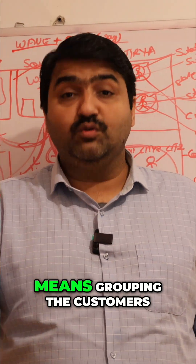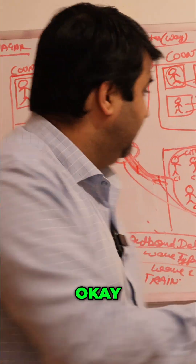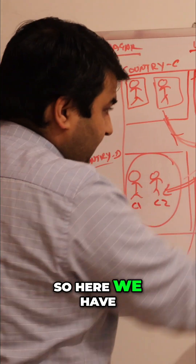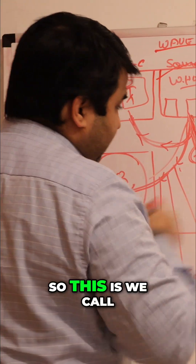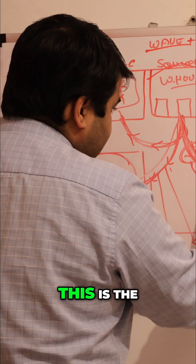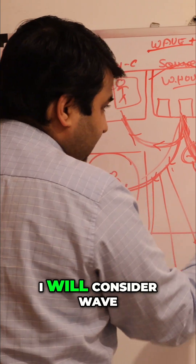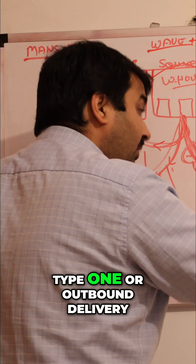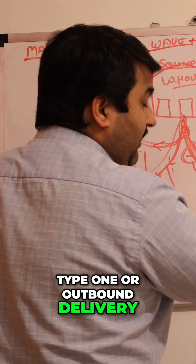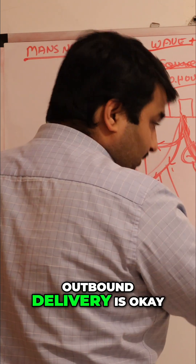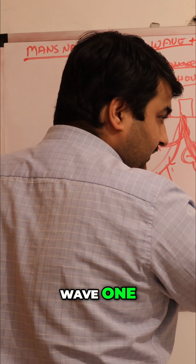Outbound means grouping the customers. So here we have the customers and this is the route. We call this Wave Type 1, or outbound delivery outbound links — Wave 1.